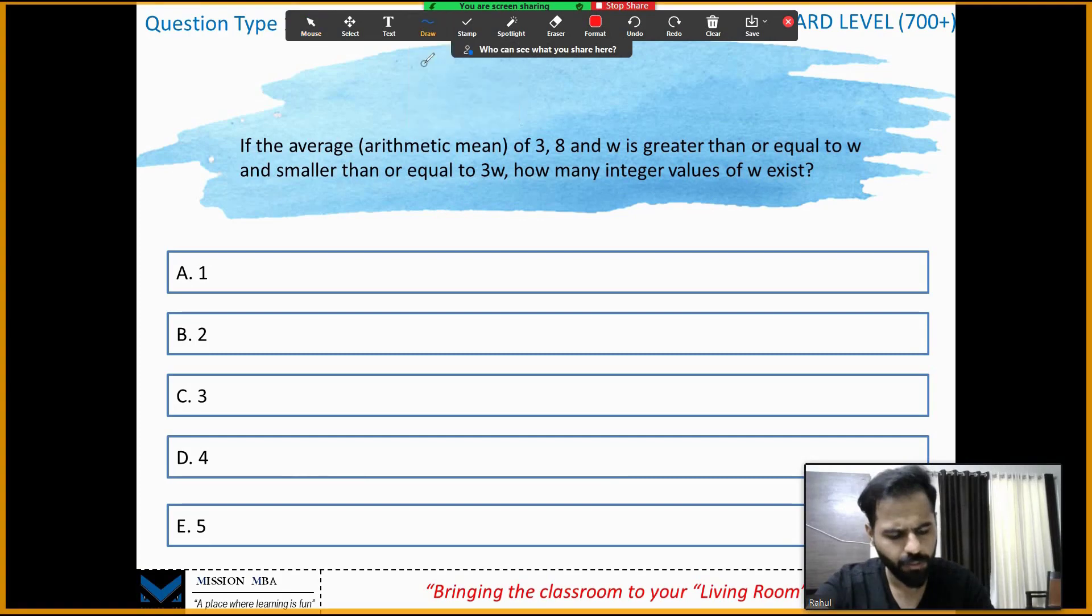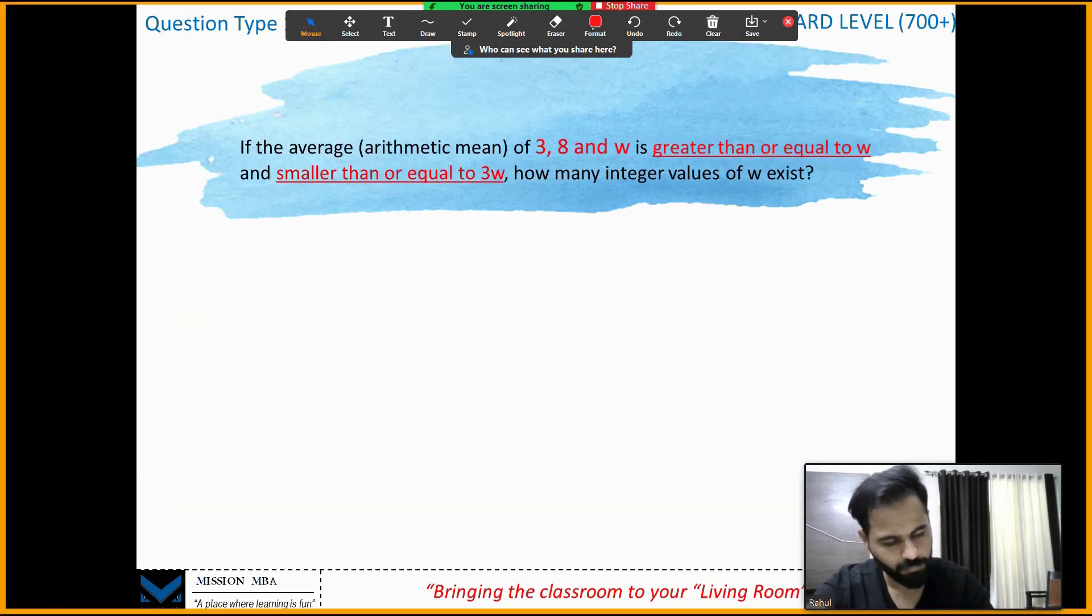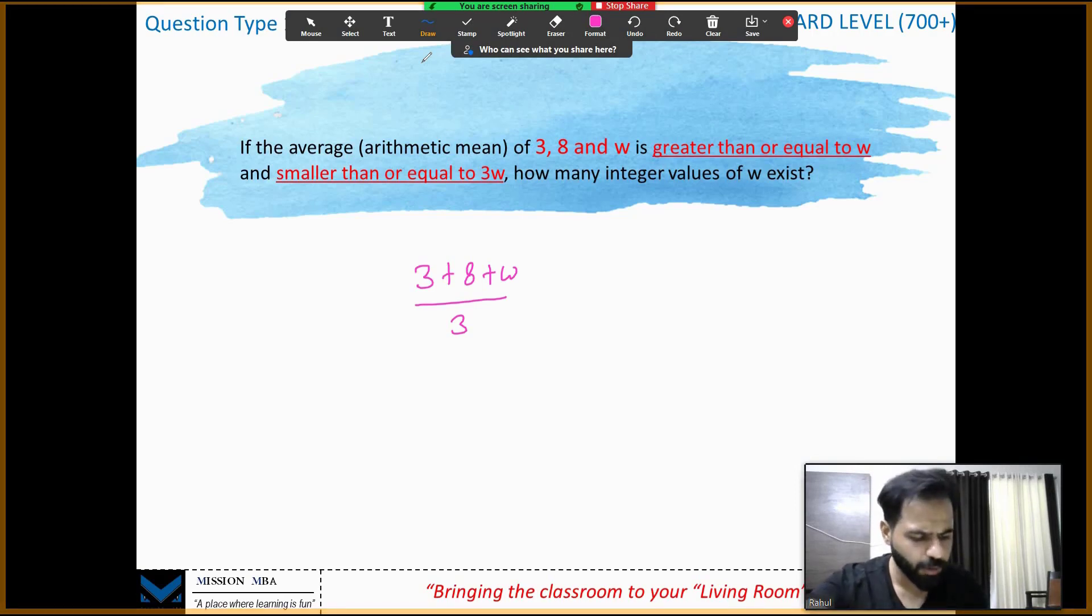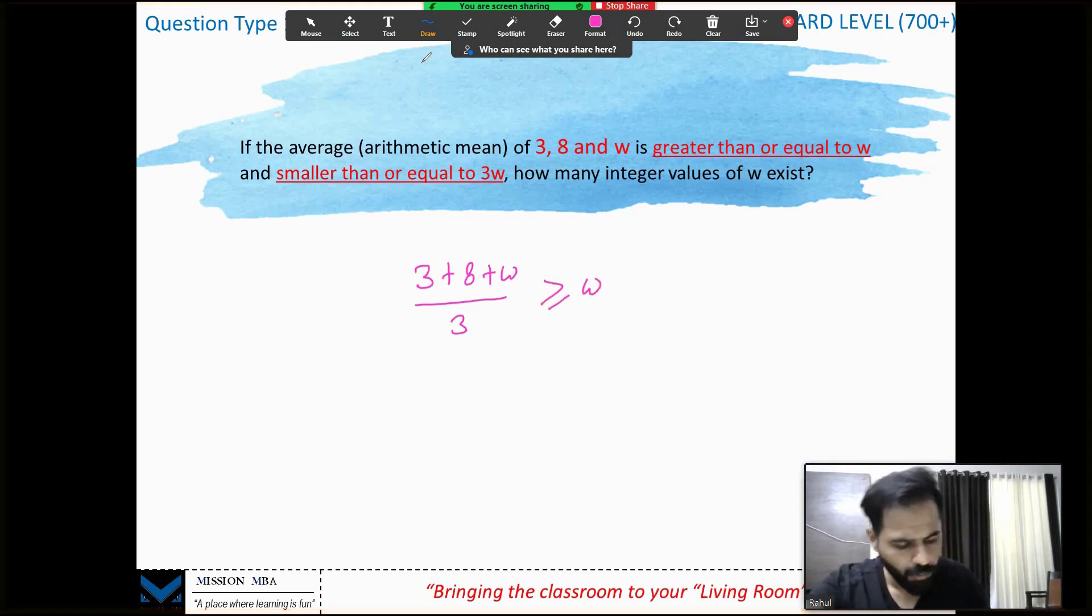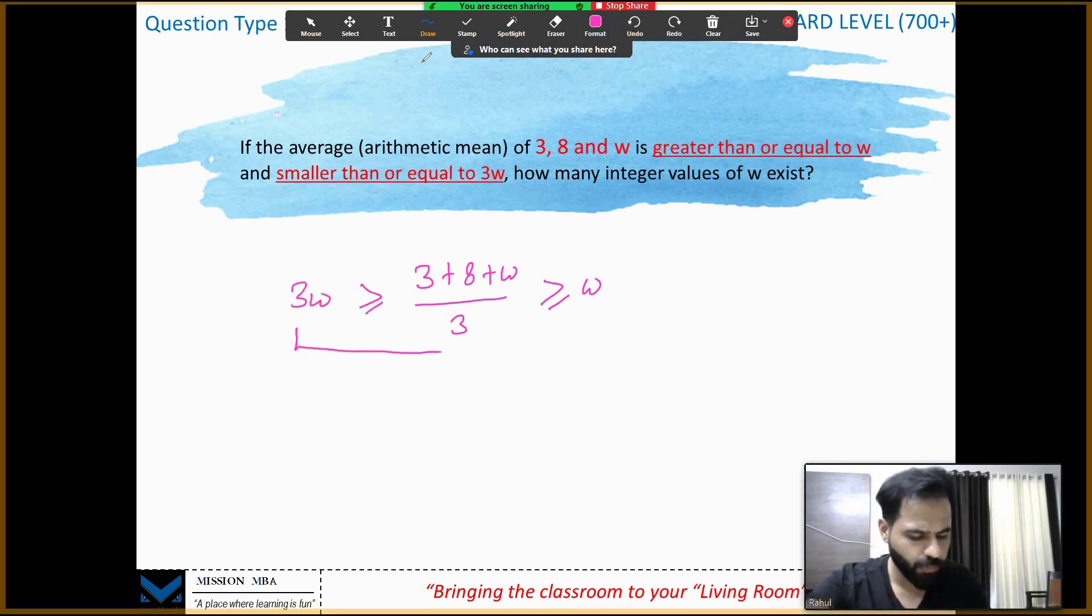Let's go to the whiteboard and try it out. Arithmetic mean of 3, 8, and w. What is the arithmetic mean? Sum of the numbers upon number of numbers. Now what is this arithmetic mean? This is greater than or equal to w but less than or equal to 3w. Let's first solve this inequality.